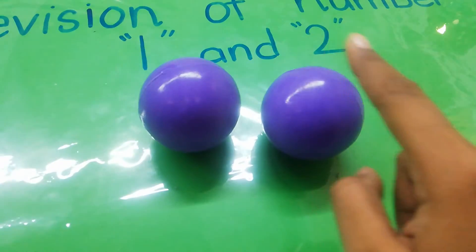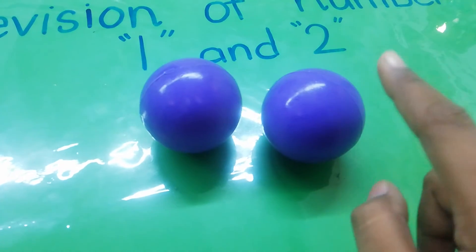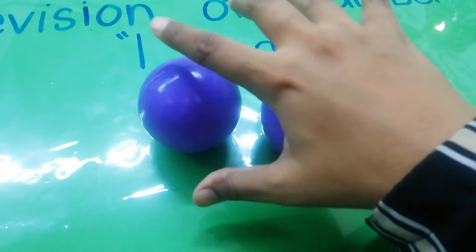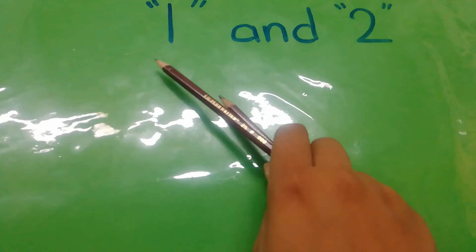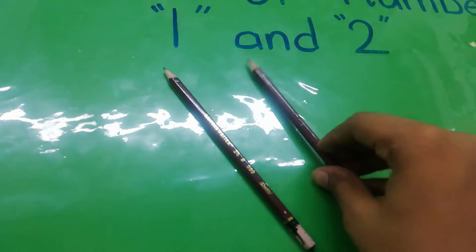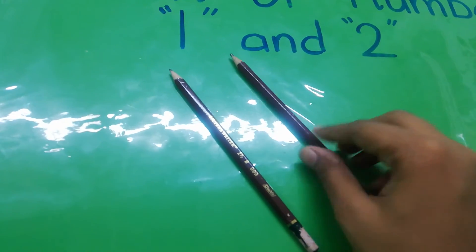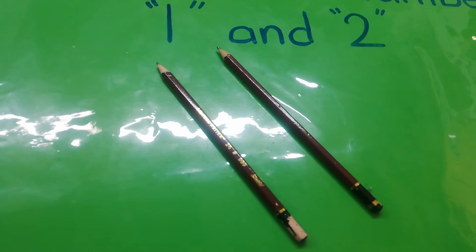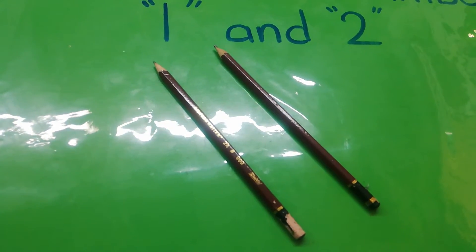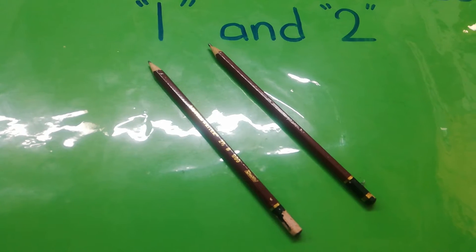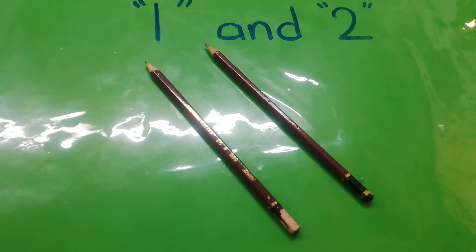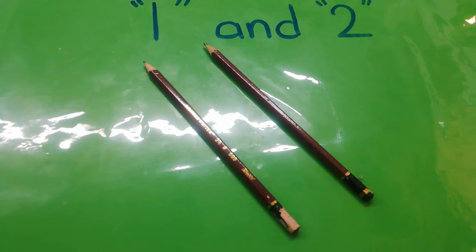See, how many balls are there? There are 2 balls. Count with me: 1, 2. How many balls? 2 balls. Yes, 1, 2.